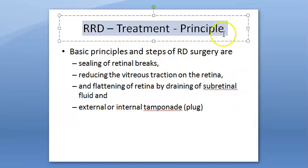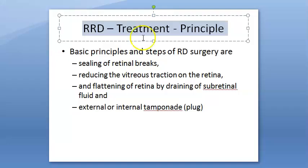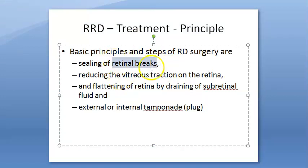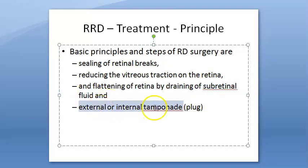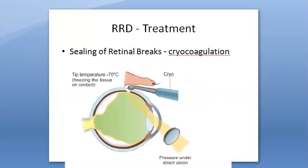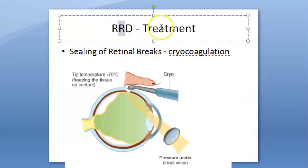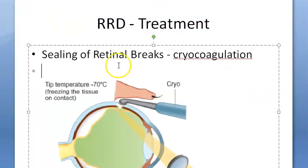Moving on to the treatment of regmatogenous retinal detachment. The principles are: seal the retinal break, reduce vitreous traction on the retina, drain the subretinal fluid and flatten the retina, and provide internal or external tamponade — tamponade being something like a plug. The first step is sealing of retinal breaks.